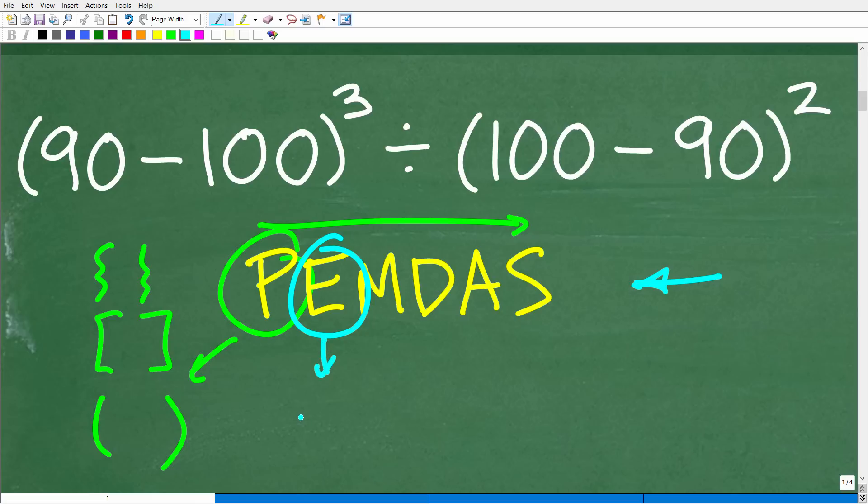Okay, so E stands for exponents. Basically, you can think of it as powers. So when you have a power, like 2 to the 3rd power, this is how we would say this, right?